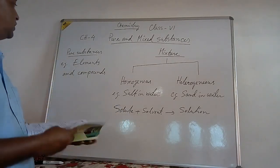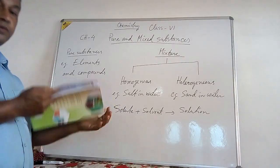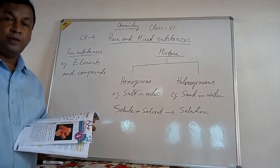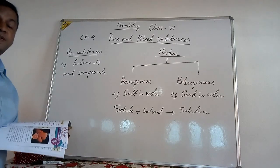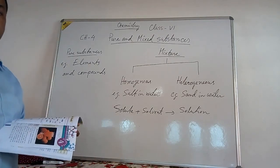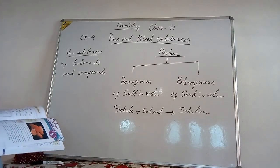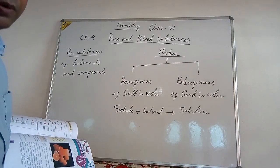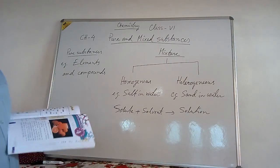First of all, you can see in page number 57 of your book, the definition of pure substance is given. A pure substance is a substance which is made of only one kind of molecules. For example, elements and compounds are pure substances.